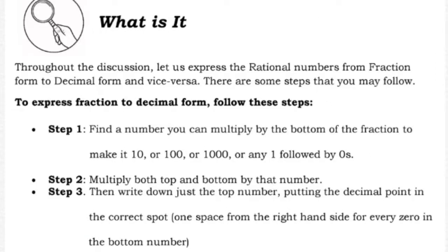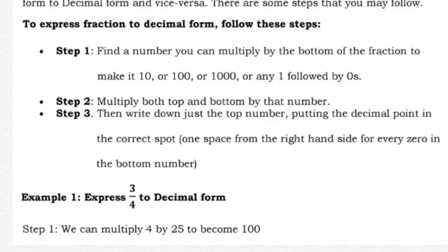Under 'What Is It': to express fractions to decimal form, follow these steps. Step 1: find a number you can multiply by the denominator to make it 10, 100, 1000, or any 1 followed by zeros. Step 2: multiply both top and bottom by that number. Step 3: write down just the top number, placing the decimal point one space from the right for every zero in the bottom number.